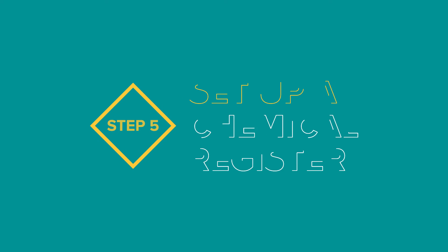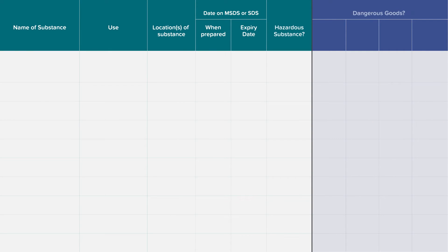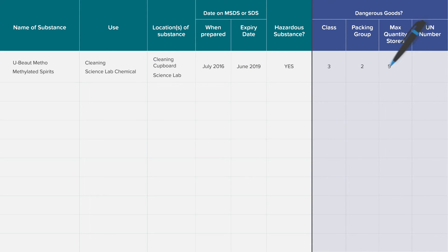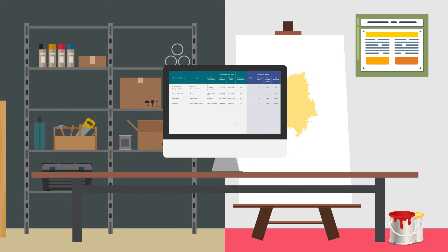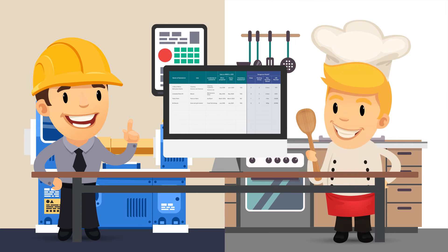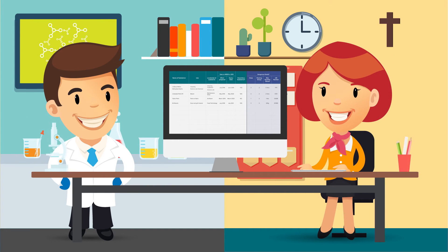Step 5: Set up a chemical register for all chemicals used and stored on the school site. A register is a list of hazardous chemicals at your school, accompanied by the current SDS for each of those chemicals. This is required under the Work Health and Safety Regulations to be prepared, kept up to date and readily accessible to all workers. Registers and SDS may be kept electronically provided workers have ready access to a computer. A hard copy should be kept in the location where chemicals are mostly used, as well as at the front office.